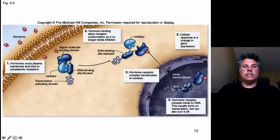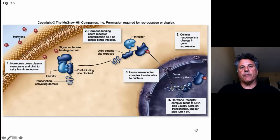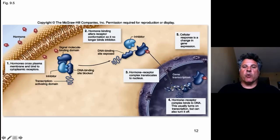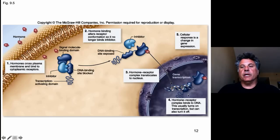When the hormone binds to the steroid hormone receptor, the hormone receptor changes its conformation — its lowest free energy state changes such that it assumes a new conformation. And that exposes a nuclear localization signal or a DNA binding site, which causes the transport of the receptor plus bound ligand, plus bound steroid hormone, into the nucleus through nuclear pores.